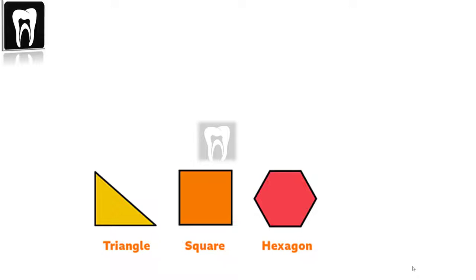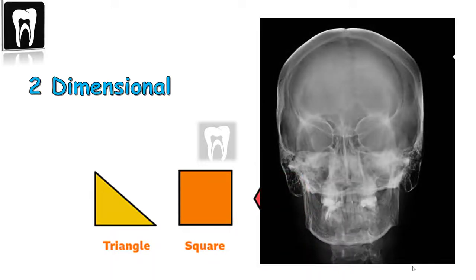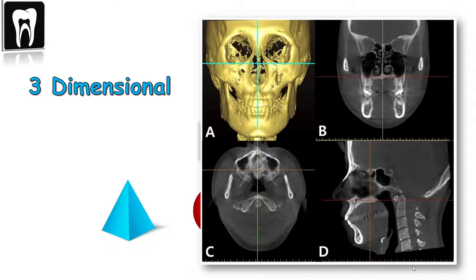What you see right now is a two-dimensional picture — the same as this x-ray of the skull, which is a 2D image. This is a 3D image, where you see all three dimensions at the same time. In x-ray imaging, being able to see all three dimensions simultaneously can be very helpful for diagnosis, which is why 3D imaging was invented.